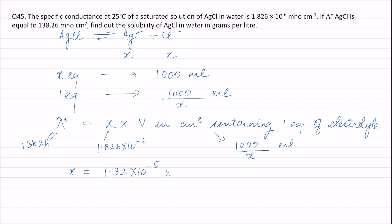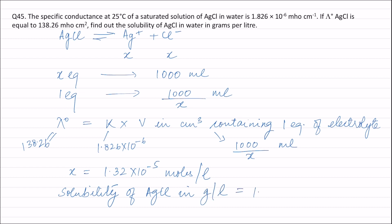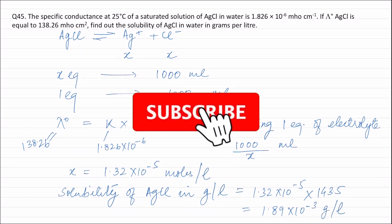Therefore, the solubility of AgCl in grams per liter equals 1.32 × 10⁻⁵ multiplied by the molecular weight of AgCl, which is 143.5. This gives a solubility of 1.89 × 10⁻³ grams per liter.